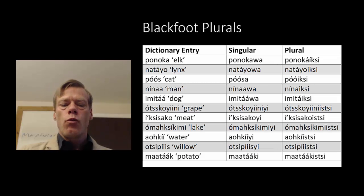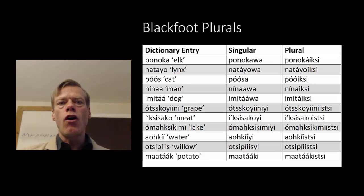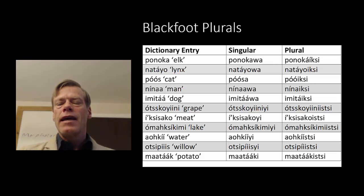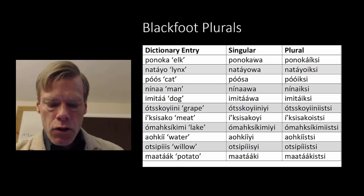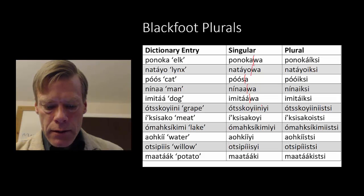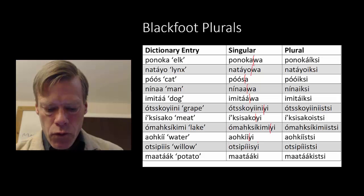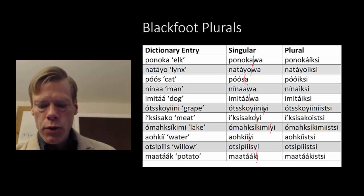To demonstrate how we do this, we're going to be looking at Blackfoot plurals. The first thing we want to do is make sure that all of our like-with-like are lined up. In the left column we've got the base form of the nouns, in the middle column we've got the singular forms, and in the right column we've got the plural forms. We can notice that the singular column has the base form plus a suffix, so the first thing we want to do is draw a line wherever we see the end of the base form and the beginning of the singular morpheme. We want to do the same thing with the plurals.